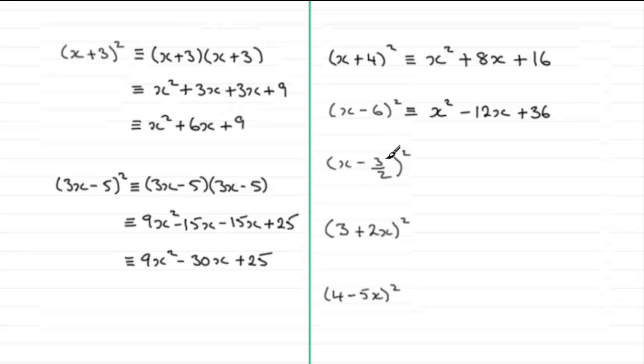With x minus 3 over 2 all squared, this is going to be identical to first term squared, x squared. The product of the two terms x times minus 3 over 2 would be minus 3x over 2, or minus 1 and a half x. We double that and we're going to get minus 3x. And then we square the last term. And if you square minus 3 over 2, you're going to get plus, and you're going to square the 3 which is 9, and square the 2 which is 4. So plus 9 quarters. I'm going to leave it like that though.